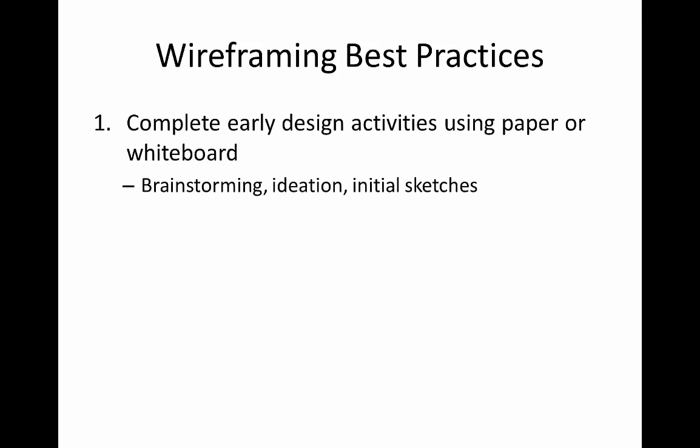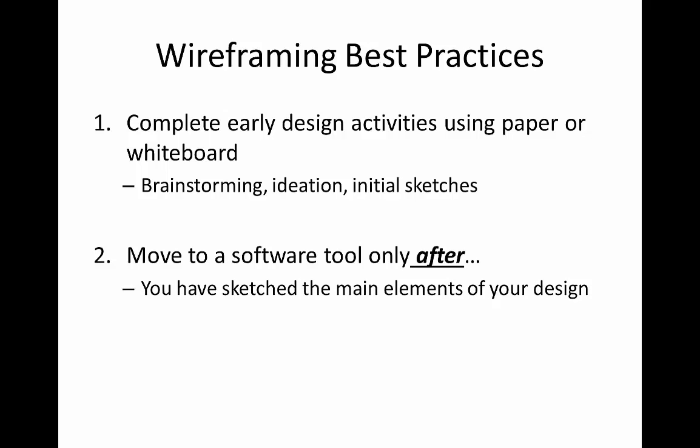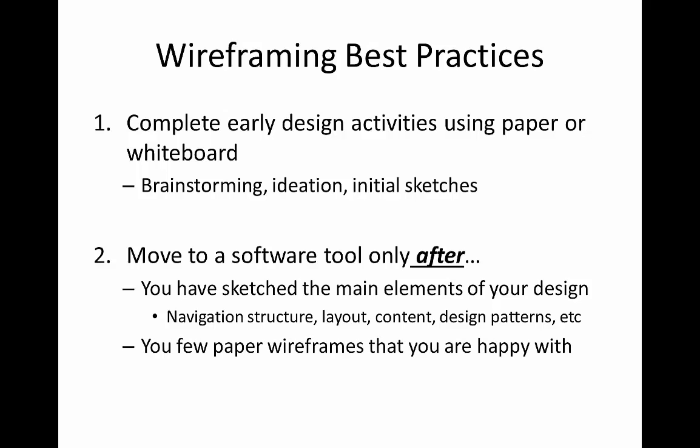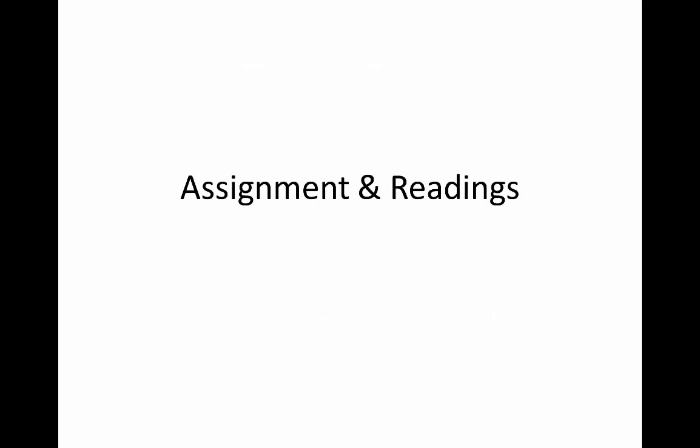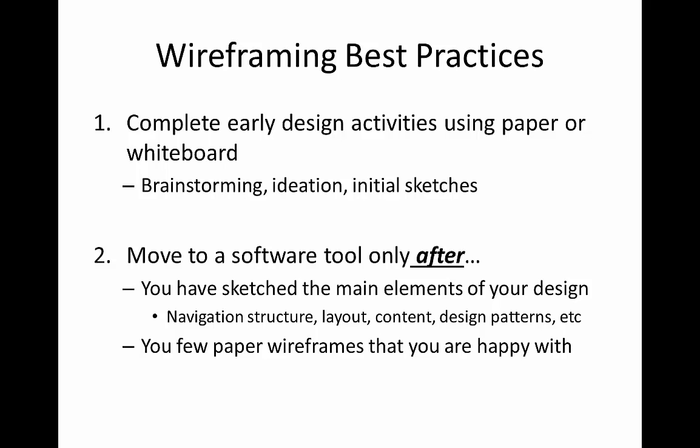So, what are best practices for wireframing in terms of tools? I recommend completing all your early design activities using low-tech methods such as paper or a whiteboard — when you're brainstorming, doing ideation sessions, and making all your initial sketches. You really don't want to move to a software product at this point. When can you use a software product if you choose? Only after you've sketched out all the main elements of your design and they seem to be working well for your scenarios — you have a navigation structure you're happy with, a layout that seems to be working, content that makes sense, and you've created not just one but a few paper wireframes you're happy with. You've stepped through your scenarios, things seem to be working, and you think you're onto something. At that point, and only that point, if you choose, you are ready to switch to a software product.